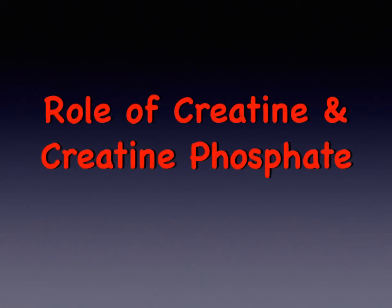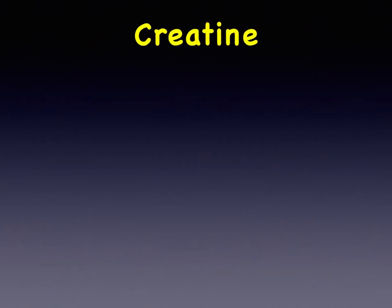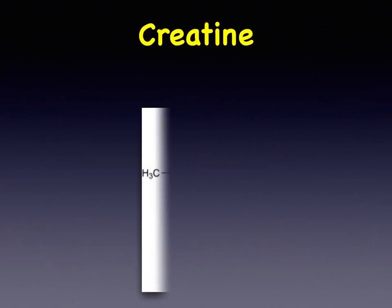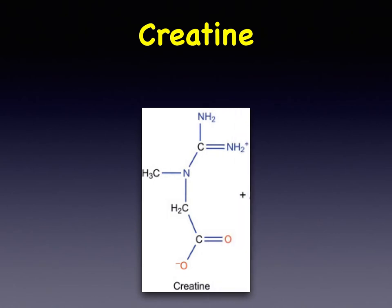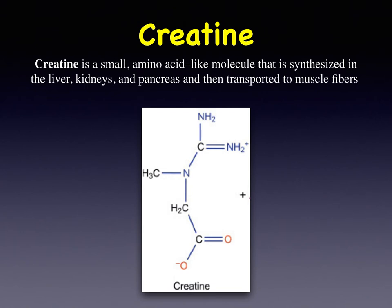Hello friends, we are going to discuss the role of creatine and creatine phosphate. Creatine is a small amino acid-like molecule. It is synthesized in the liver, kidneys, and pancreas, and is then transported to muscle fibers.